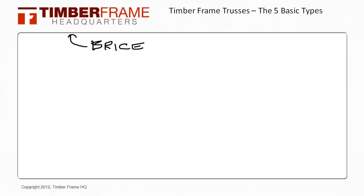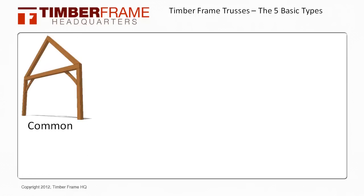The first one is a common truss. While basic and simple, the strength and affordability of this design is unmatched, and as its name implies, it is the most common truss used in timber framing today and in the past. You can tell a common truss by the lower tie beam joining the two rafters at their bottoms.